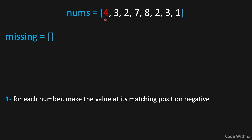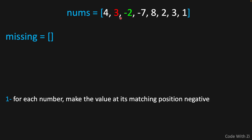Our approach is simple — I'll visualize everything. We're going to loop through this array and follow one rule: for each number we loop through, we make the value at its matching position negative. For example, the first element is four. Whatever value we're looping through, we find the number at the position of that value minus one. Four minus one is three, so we find the index-three position — because arrays are zero-indexed — and make that number negative. Now we have negative seven there. Then we move on.